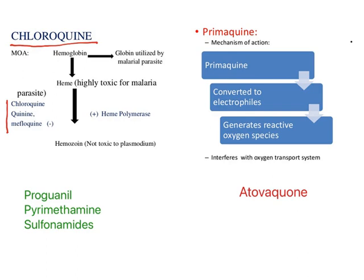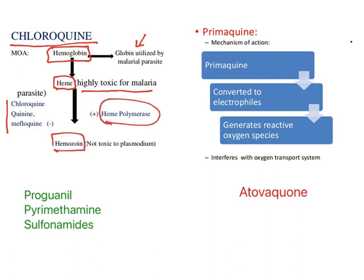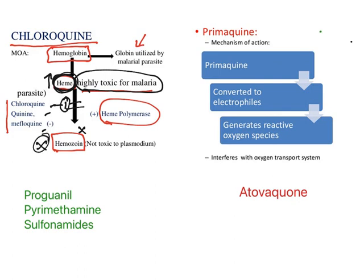Chloroquine, quinine, and mefloquine all have a similar mechanism of action. When the organism gets into the red blood cell, it feeds on hemoglobin — the globin is utilized by the malaria parasite, but heme is left behind. This heme is highly toxic to the malaria parasite, so it uses an enzyme called heme polymerase to polymerize heme into hemozoin. Chloroquine, quinine, and mefloquine inhibit this step, preventing hemozoin formation so that heme levels increase and become toxic to the parasite.